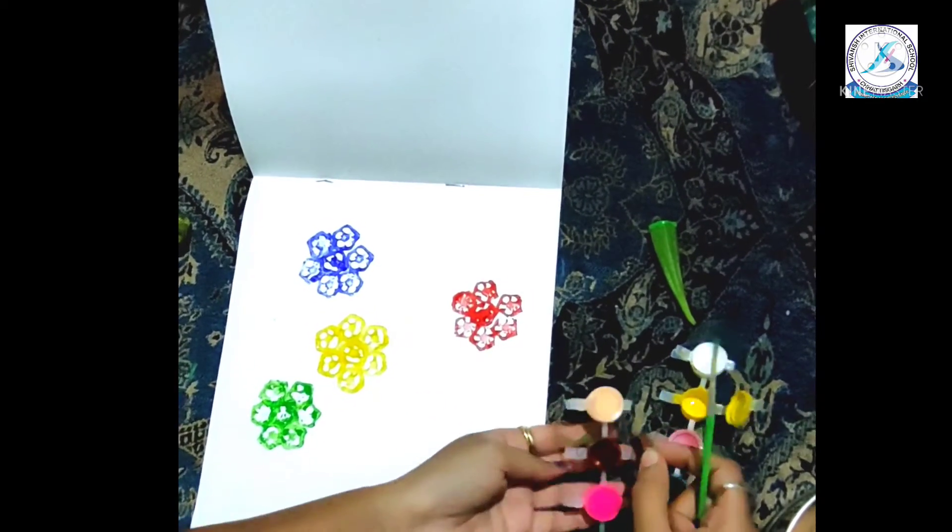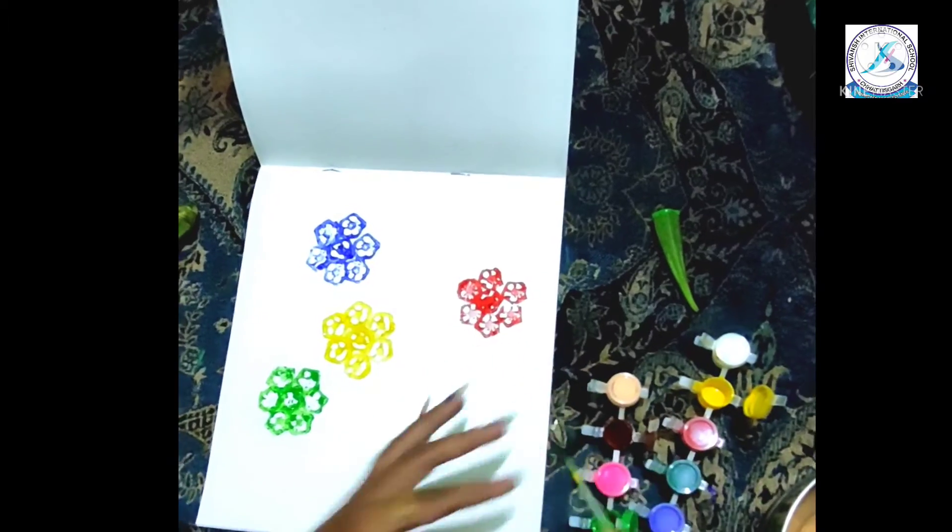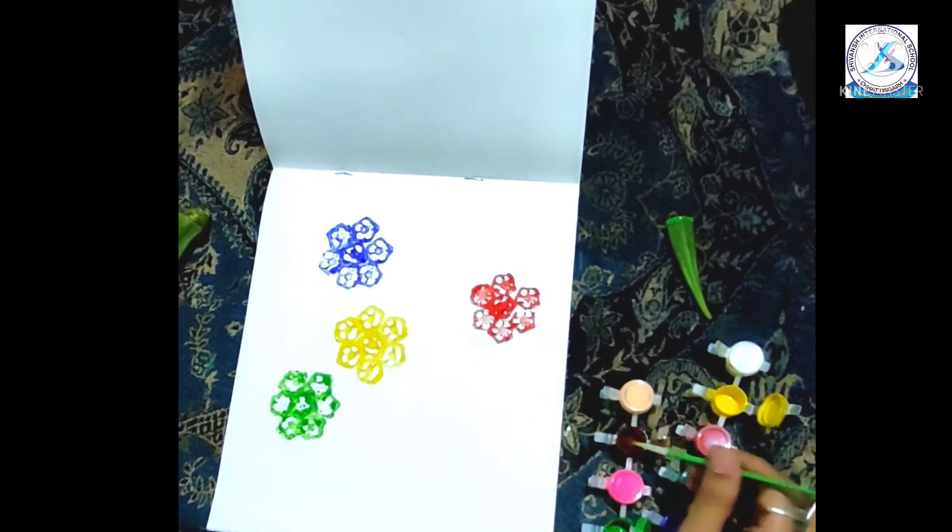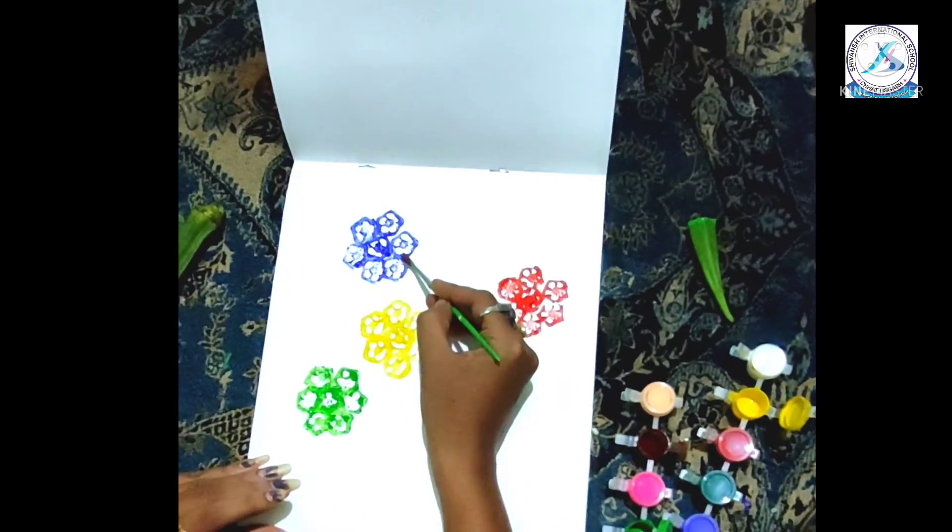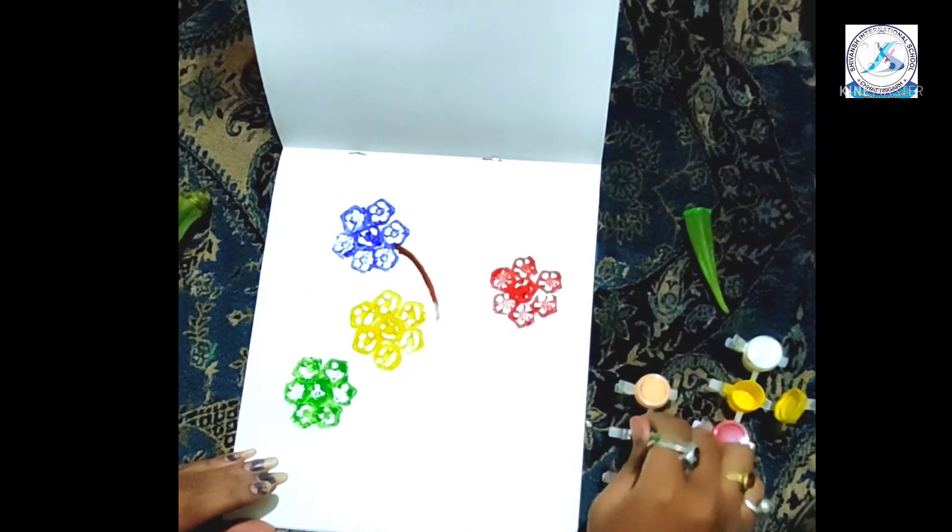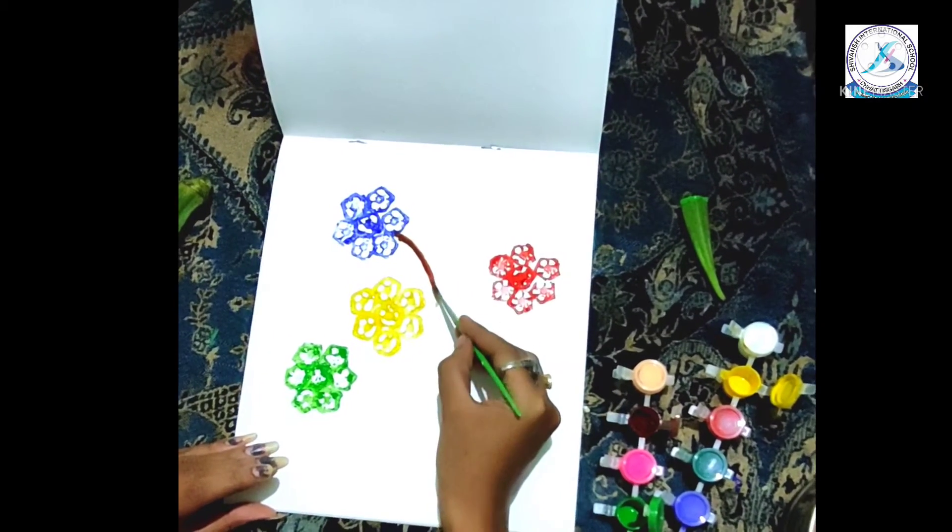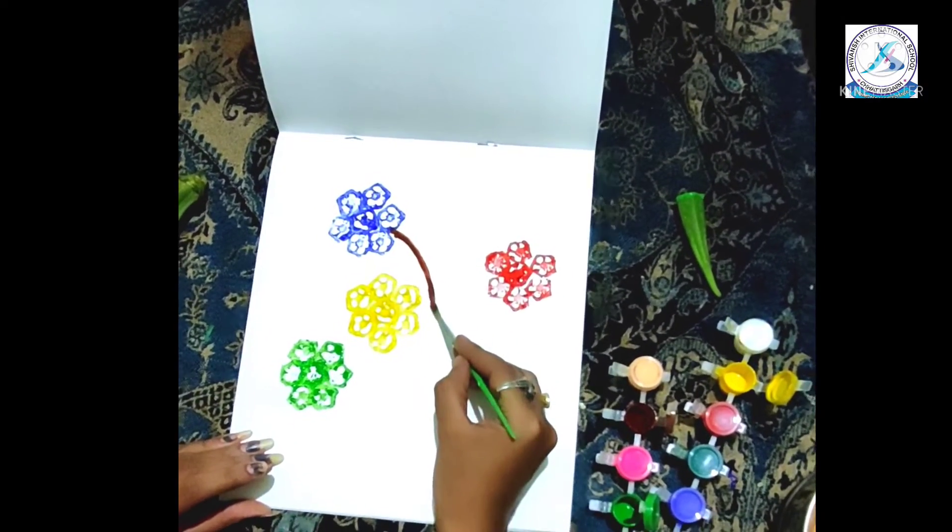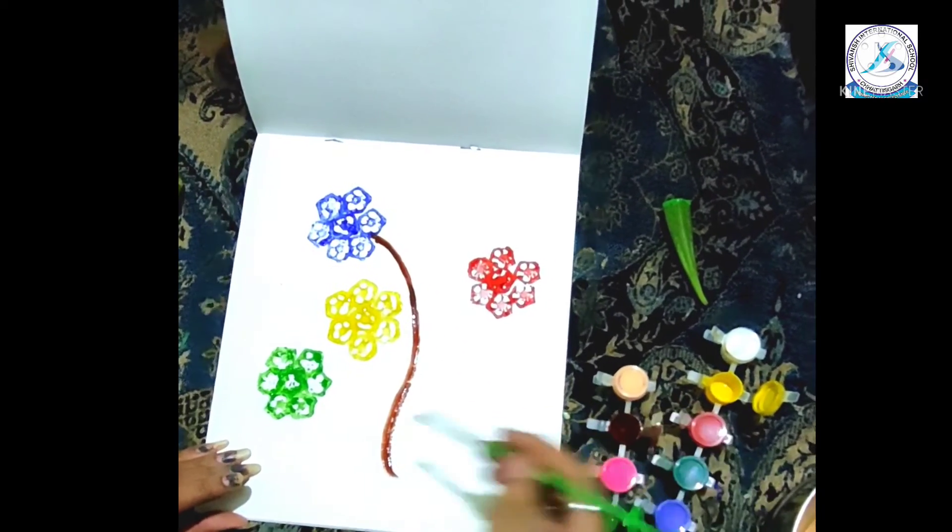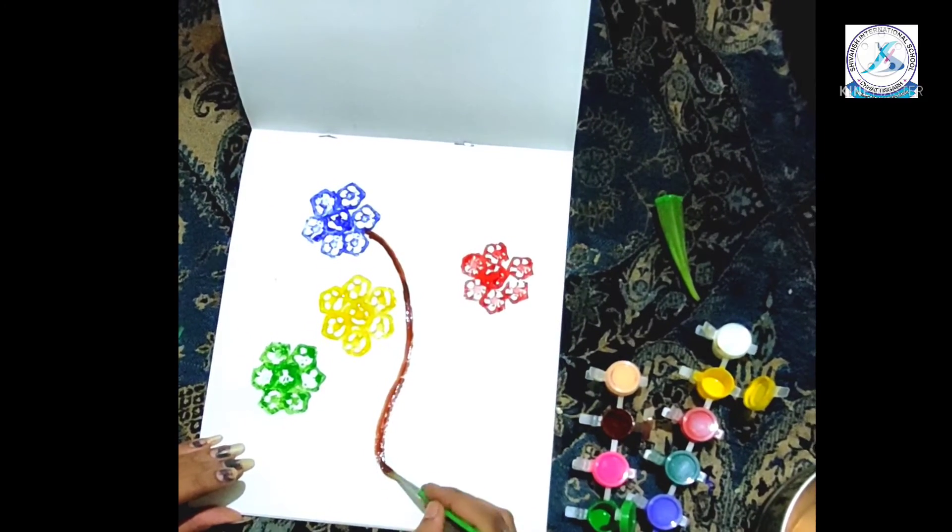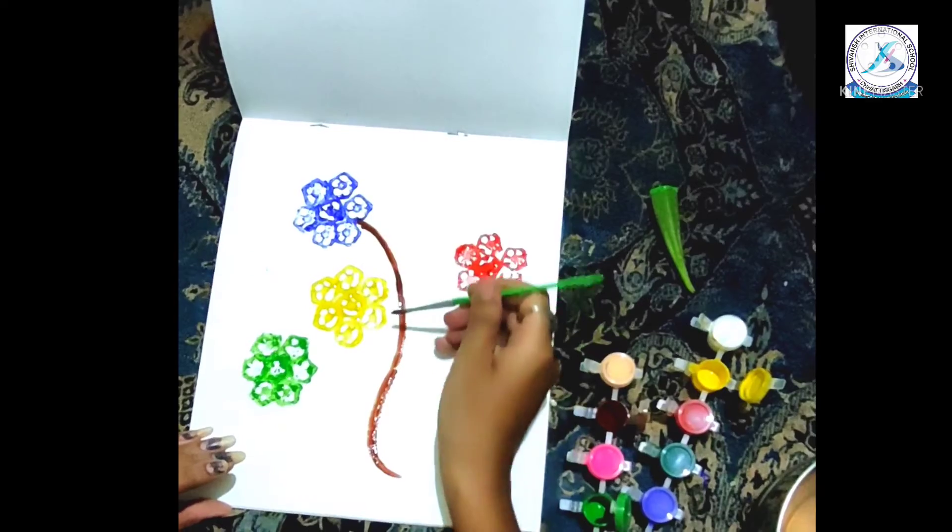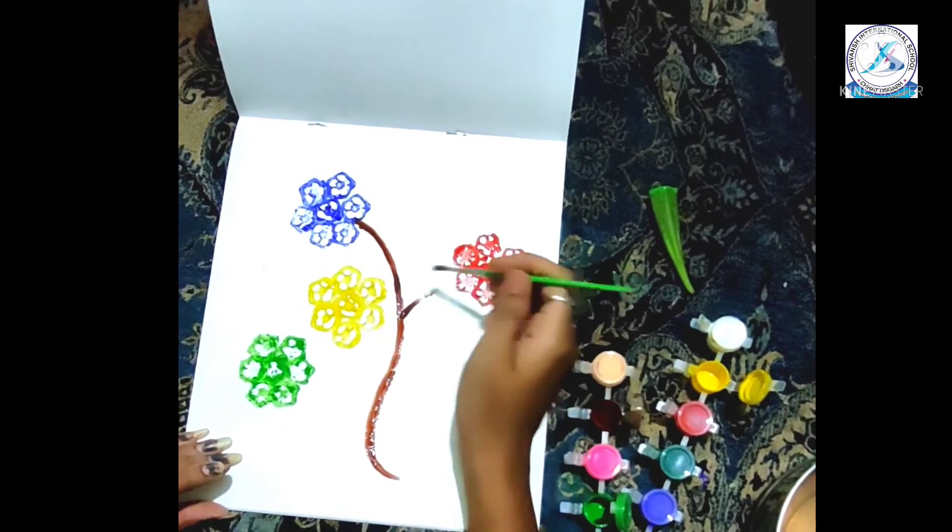Take green color and draw a line. Then join the flowers with the lines.